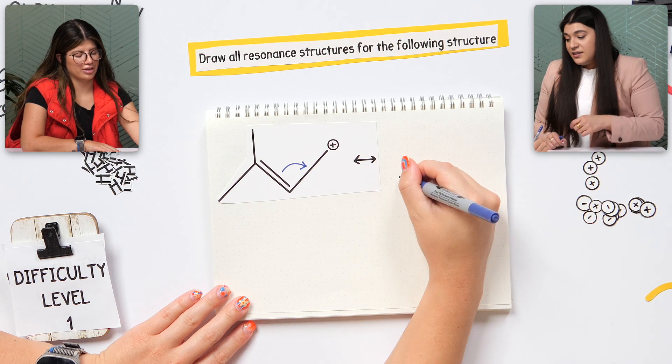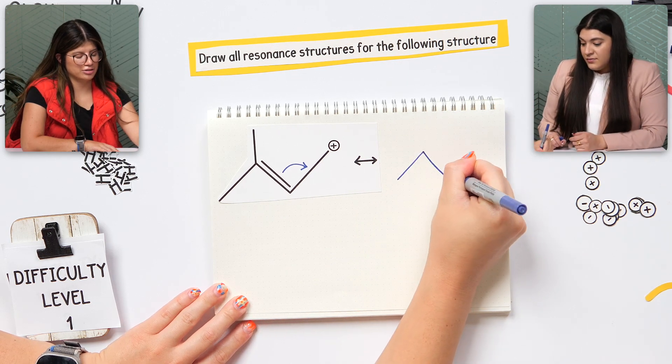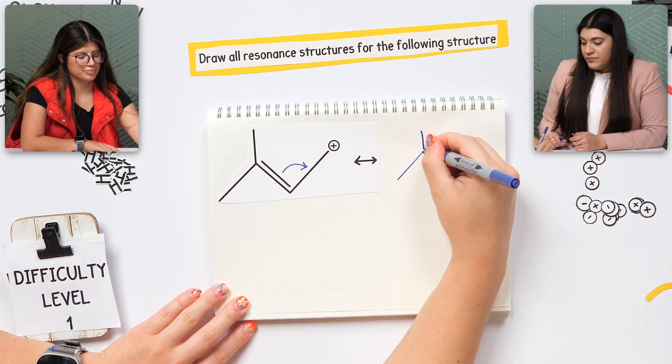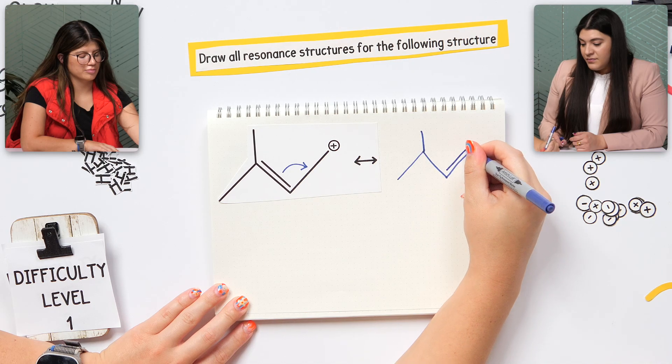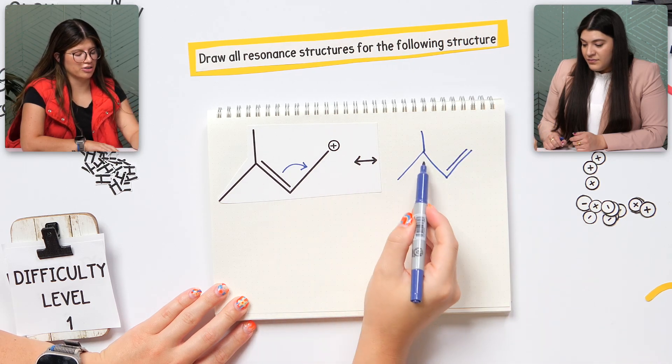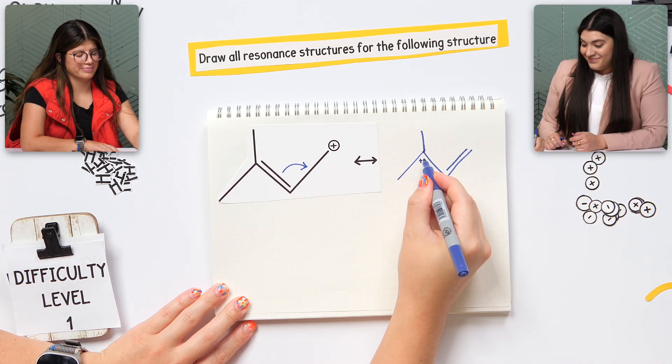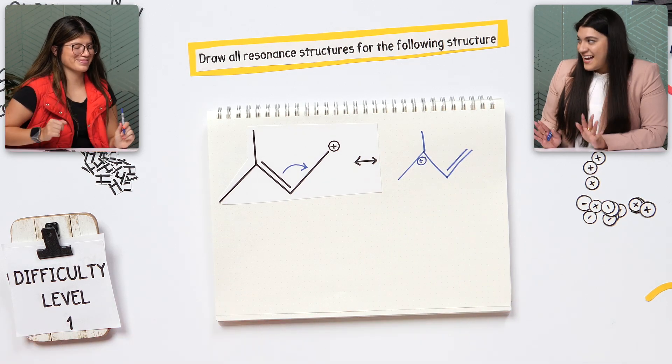Next, let's draw the resonance structure. Good. And then my positive charge would be here now. Yes. Beautiful. That is exactly correct.